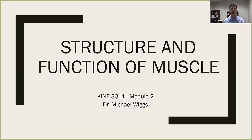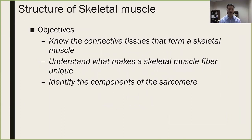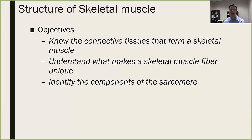We're covering the structure and function of skeletal muscle here in Module 2. The objectives: I'm going to break this into several parts. We're going to start with the structure and function of muscle, then get into muscle fiber types, and finally end with the sliding filament theory of how muscle actually contracts. For the first part, we need to understand the connective tissues playing a major role in creating the form of skeletal muscle, what makes the skeletal muscle fiber unique, and you'll need to be able to identify the components of the sarcomere.